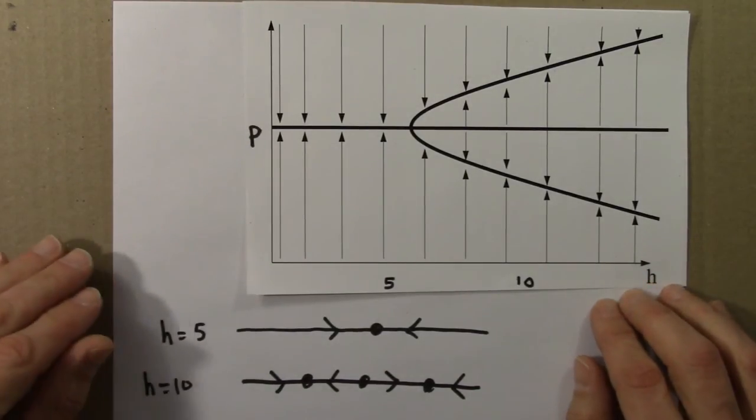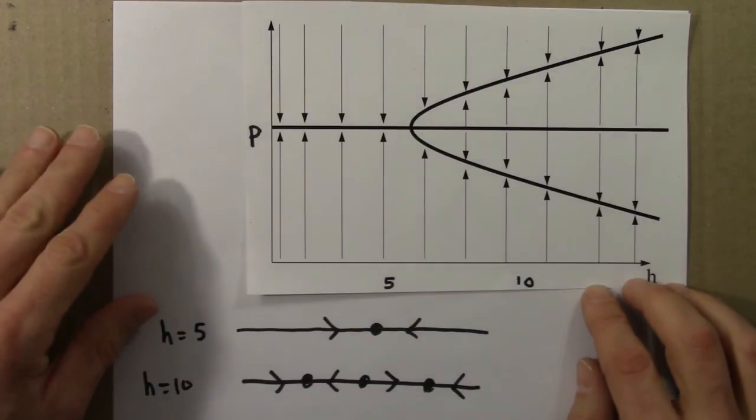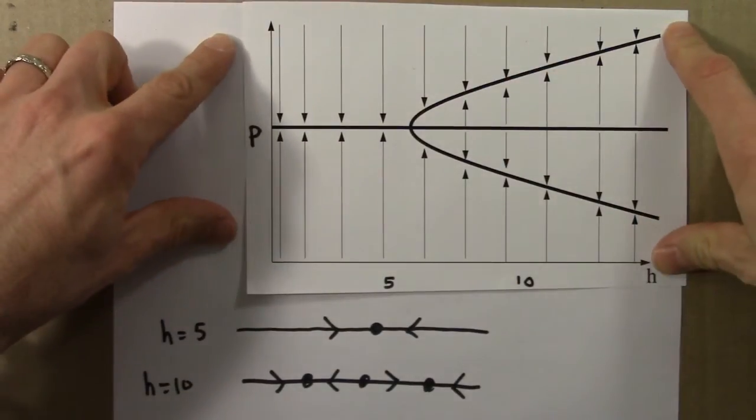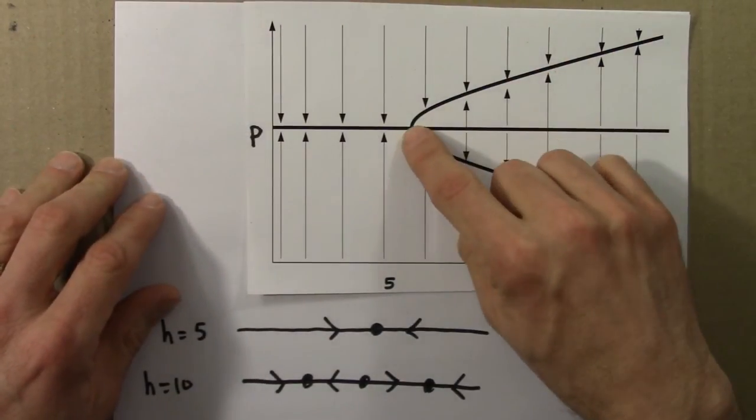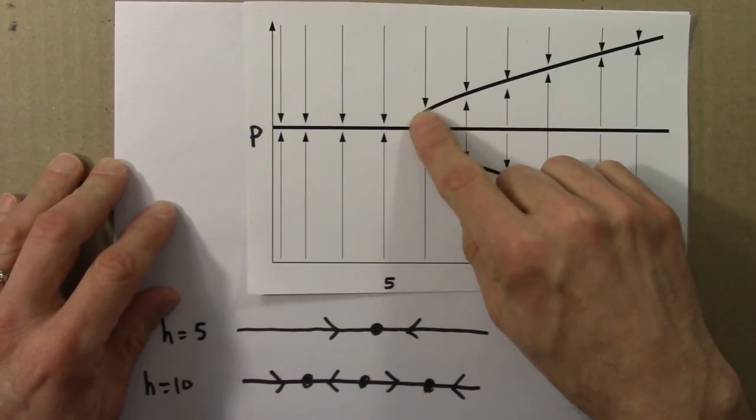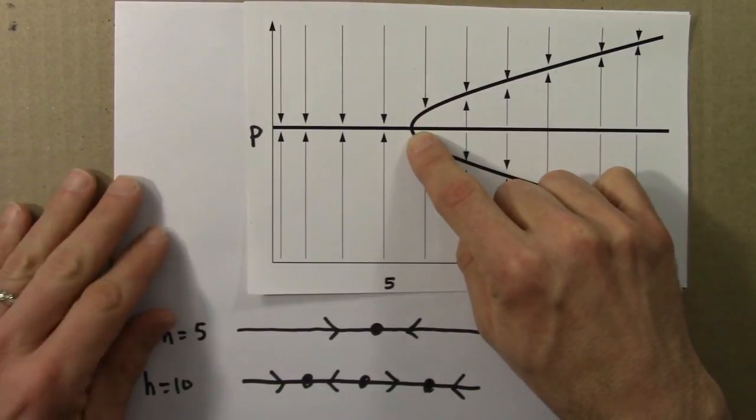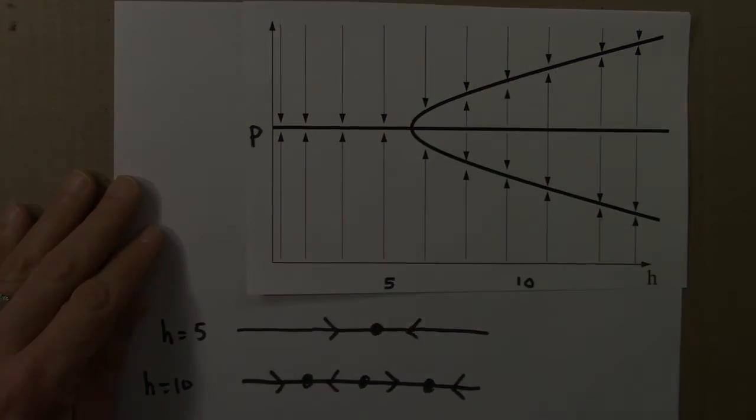In the next video in this unit, we'll leave bifurcation diagrams for a moment and focus on the bifurcations themselves—what's going on when we have these sudden transitions from one type of behavior to another.